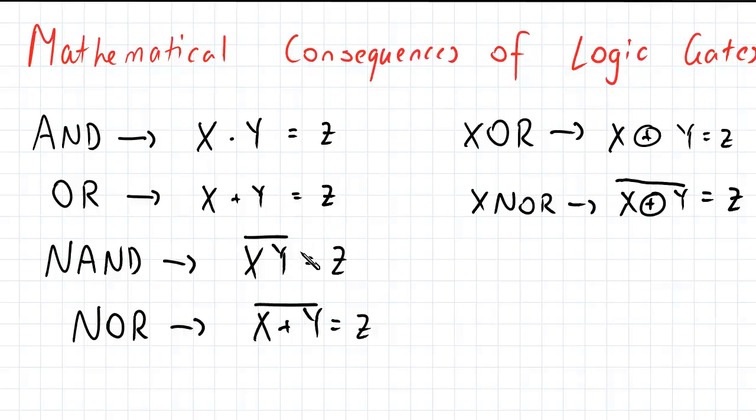We already established that the NOT logic gate provides an inverse or a negation, so therefore a NAND, it follows, will just be the inverse of x multiplied by y. Similarly, NOR will be x plus y and the inverse.